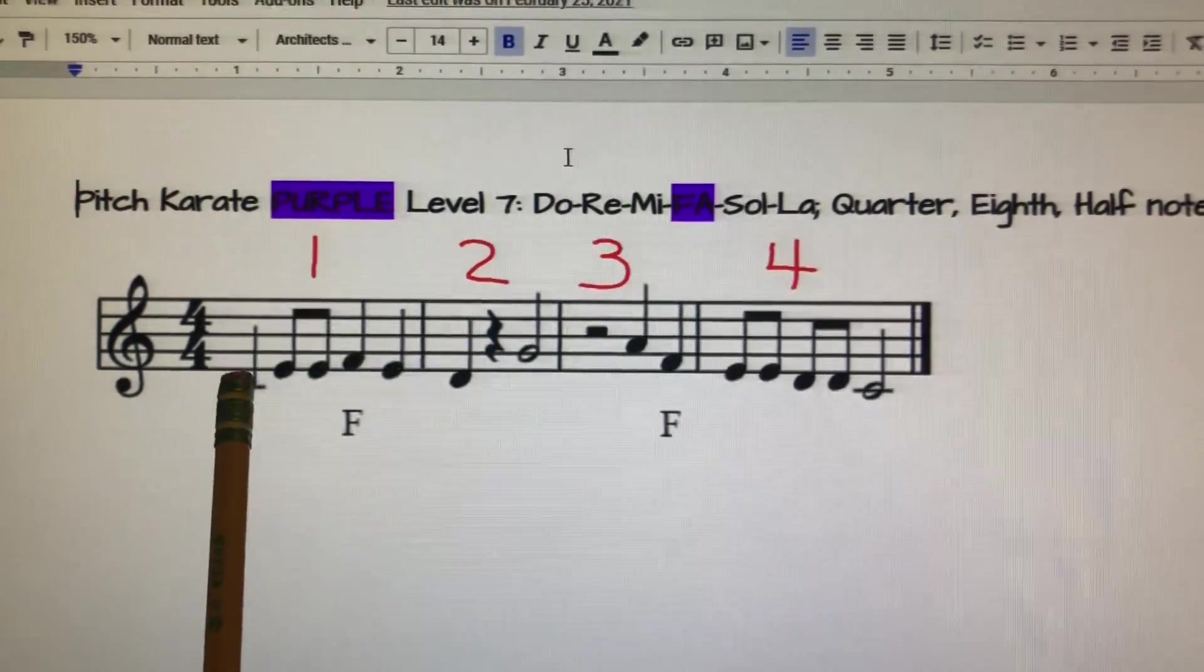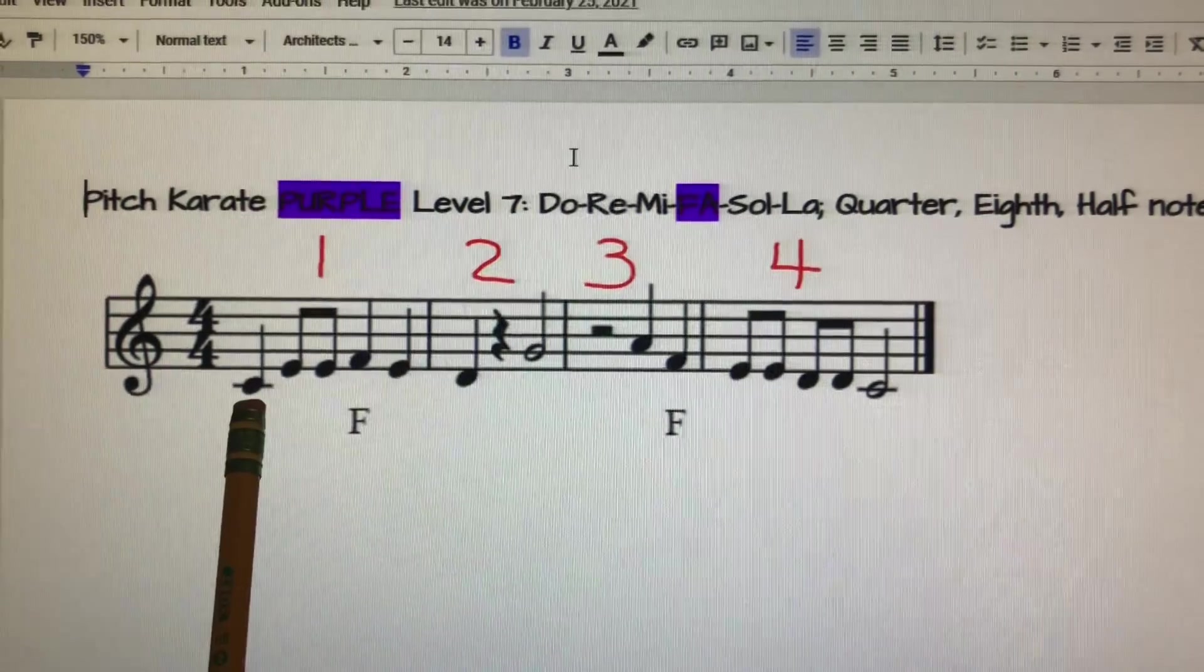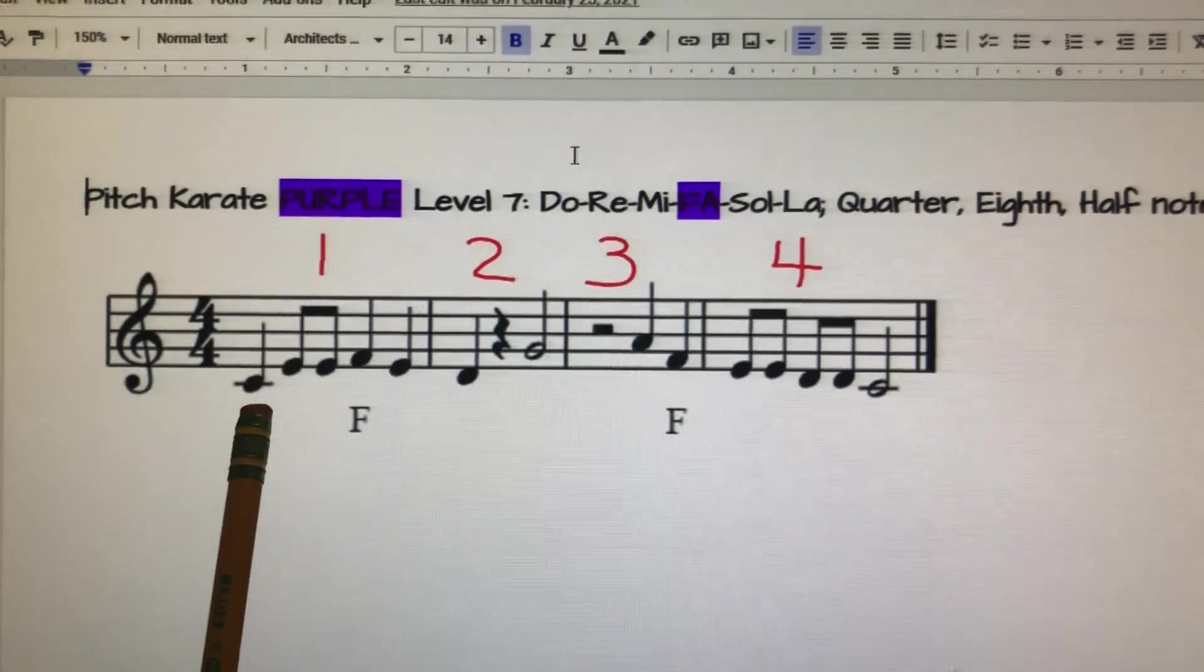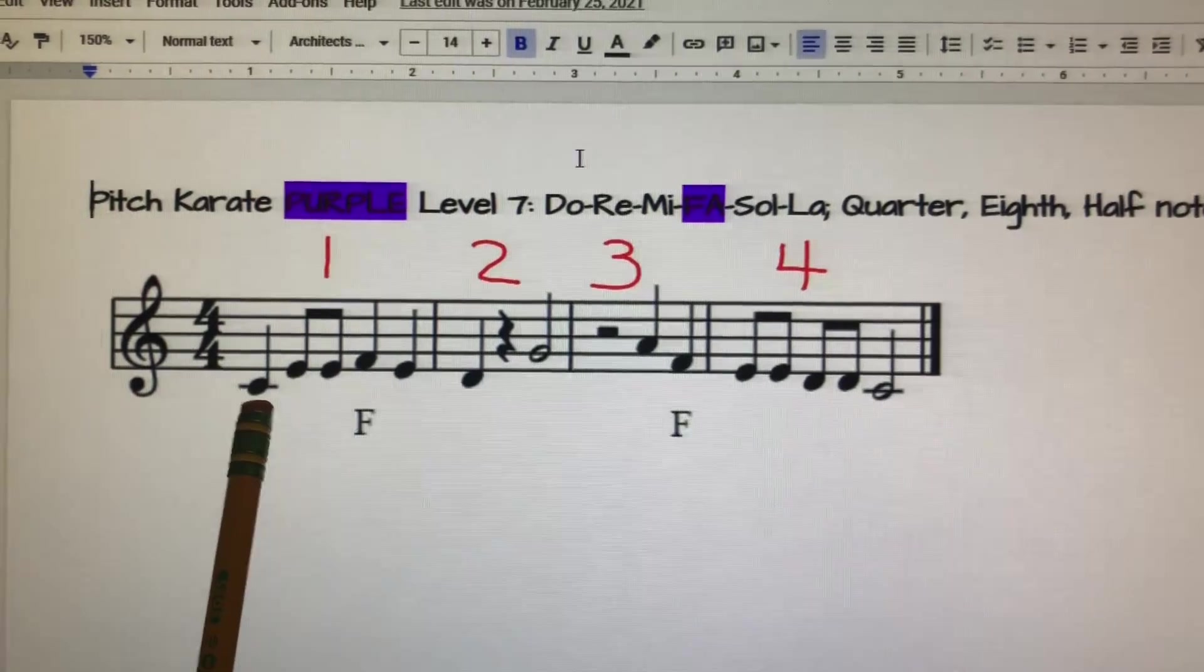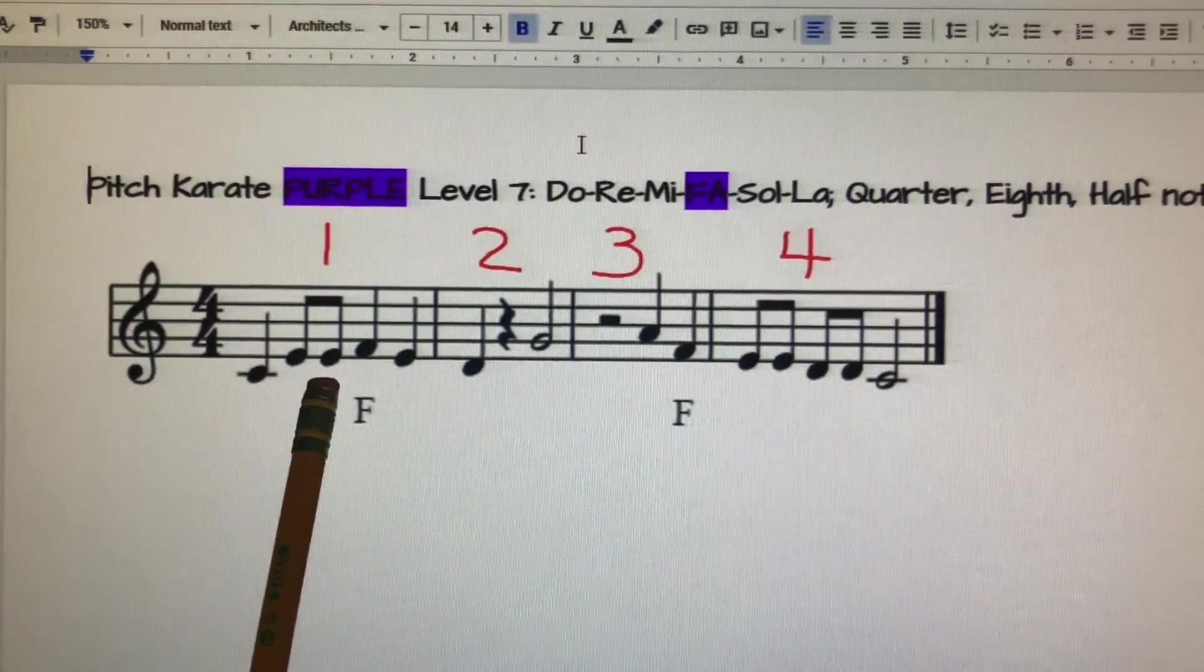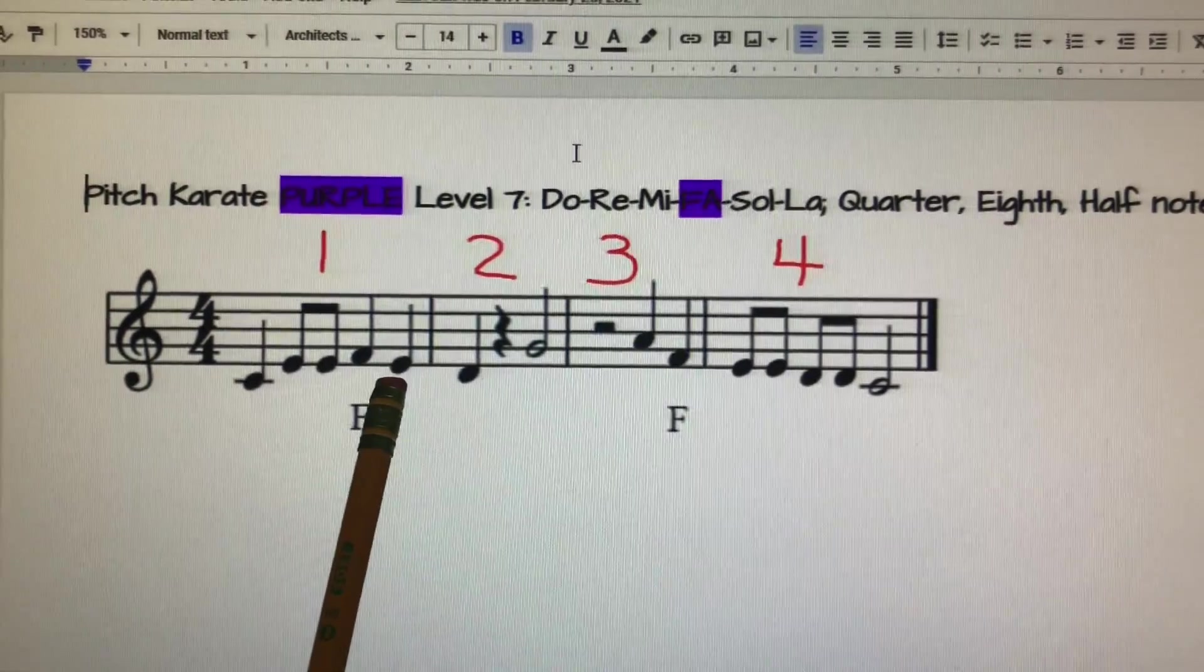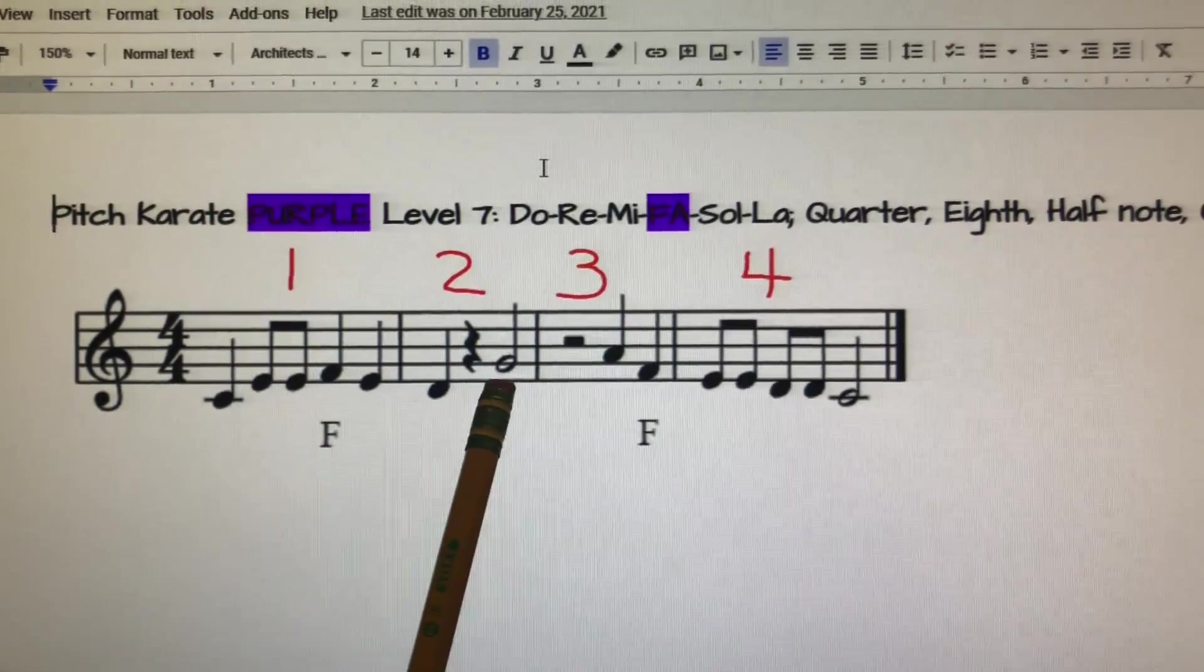Okay, now we're going to put measures one and two together, starting with that low Do. Let's sing it. I'll sing it first, then you. Here I go: Do, Mi, Mi, Fa, Mi, Re, So.